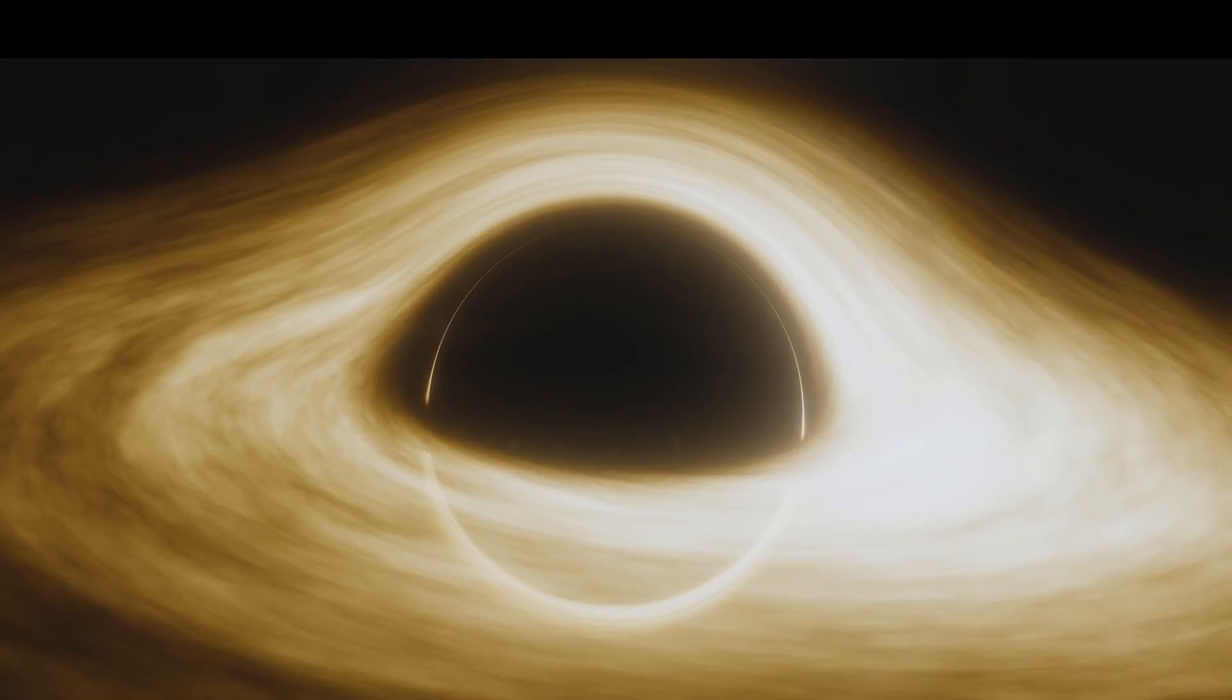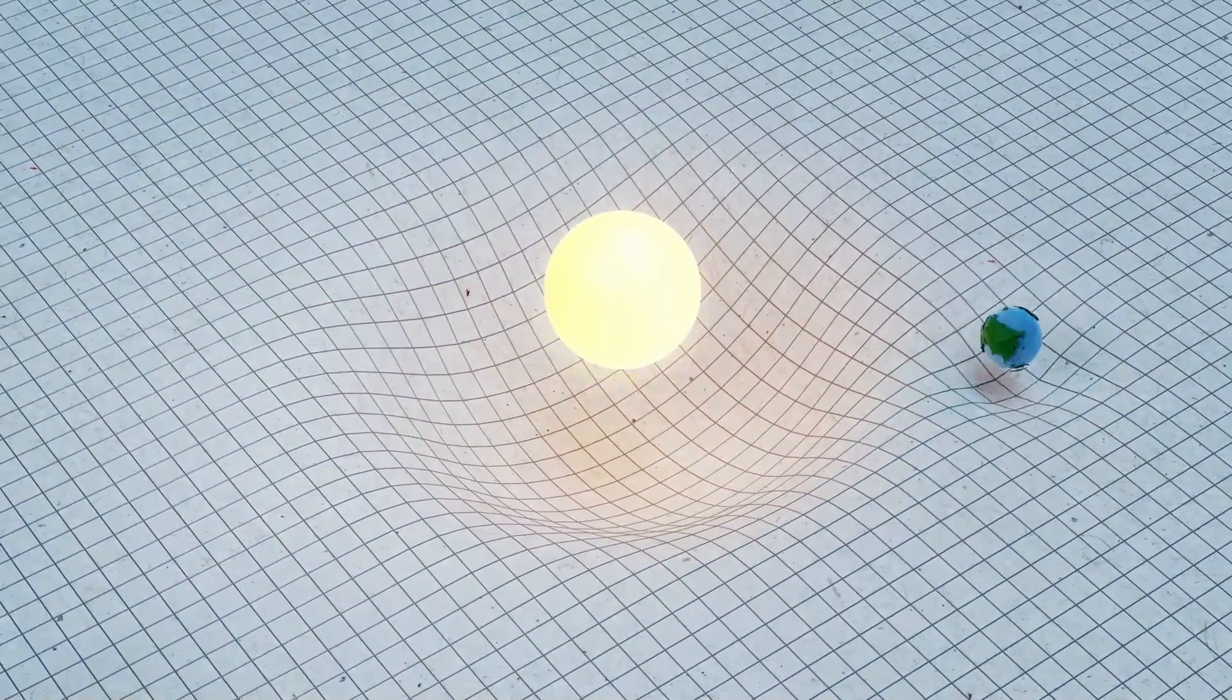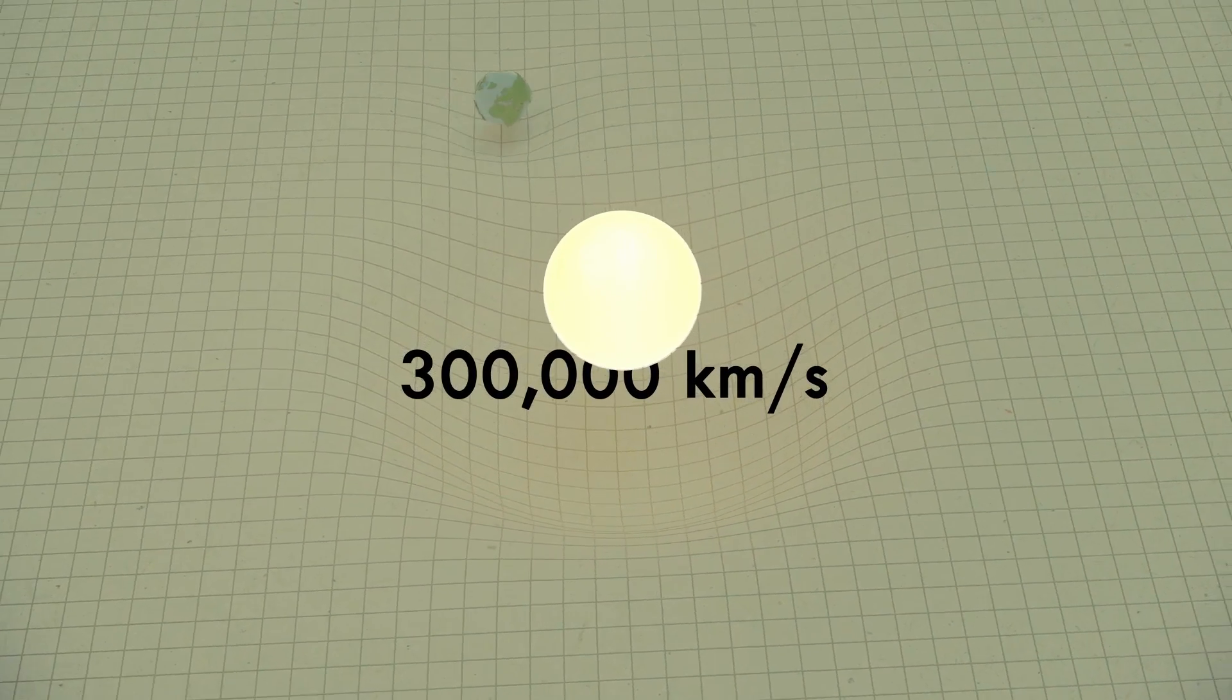This sparks the inevitable question: How do black holes affect light if light possesses no mass? A revolutionary concept of the previous century that forms a significant pillar of Einstein's theory of relativity is that light speed is universal, remaining steady at roughly 300,000 kilometers per second.